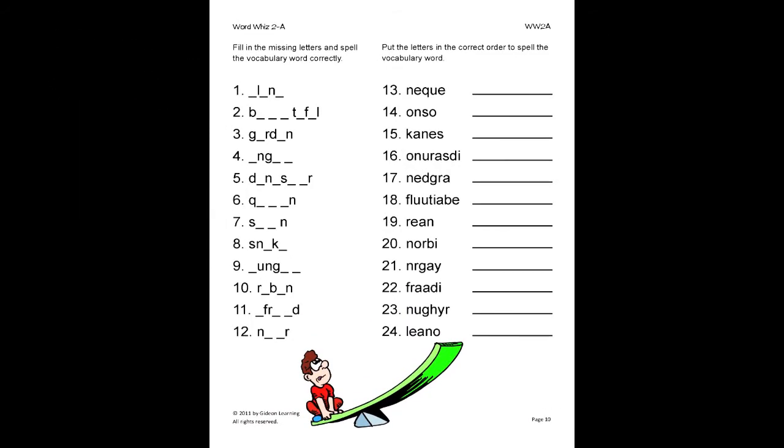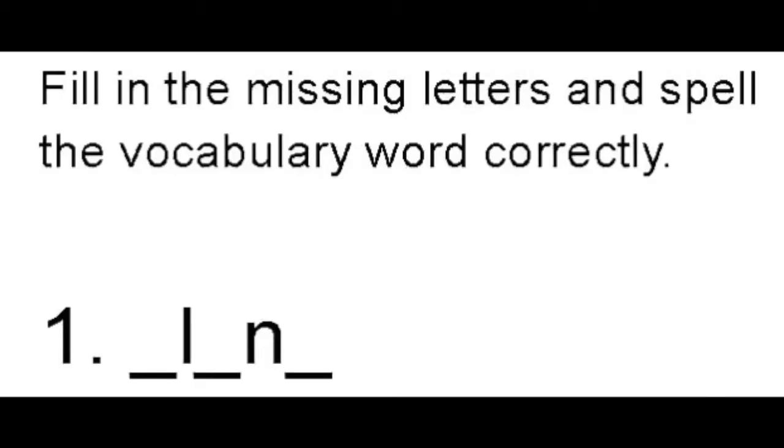Here, the student will fill in the missing letters and spell the vocabulary word correctly. Let's do number 1 for example. Since we are familiar with our vocabulary words, we know alone would be the correct word here since we are given the second and fourth letter. So we will fill in the missing letters on the space provided.